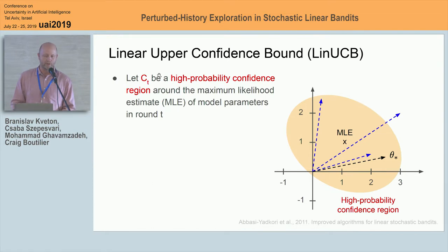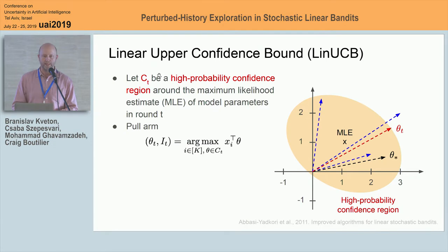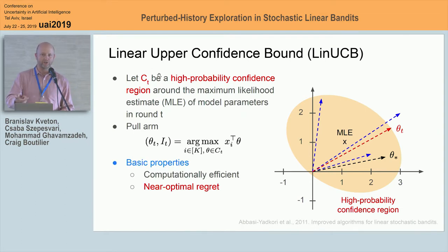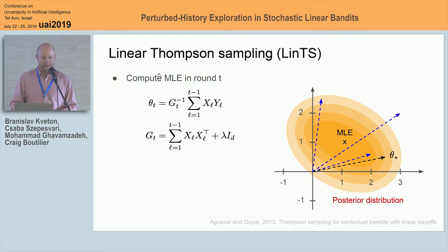We have many algorithms for linear bandits. For instance, in upper confidence bound algorithms, the learning agent tracks a high-probability confidence region around the maximum likelihood estimate of the parameters of the linear model. Denoting this high-probability confidence region by C sub T, in round T you simply pull the arm which has the highest dot product of the feature vector of that arm with any parameter vector within this high-probability confidence region. We know that upper confidence bound algorithms in linear bandits are computationally efficient and achieve near-optimal regret.